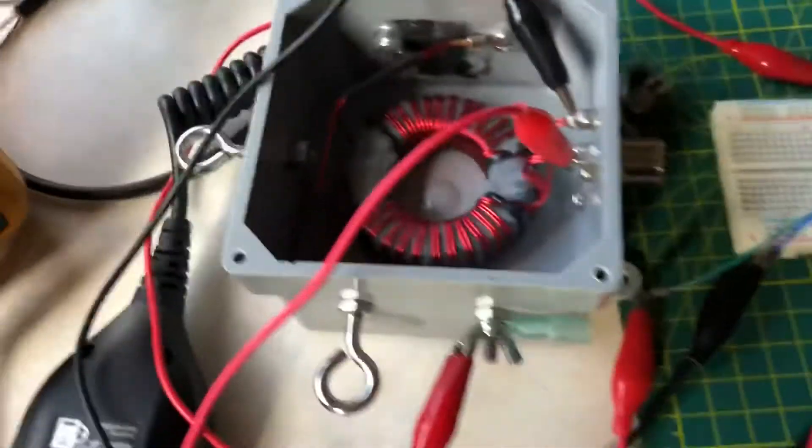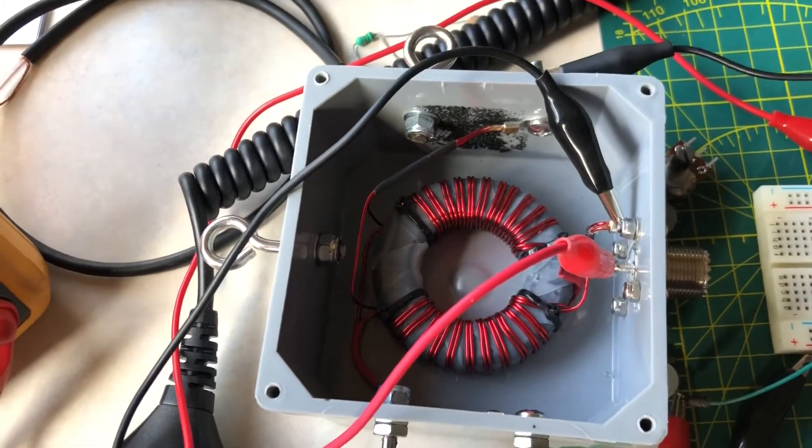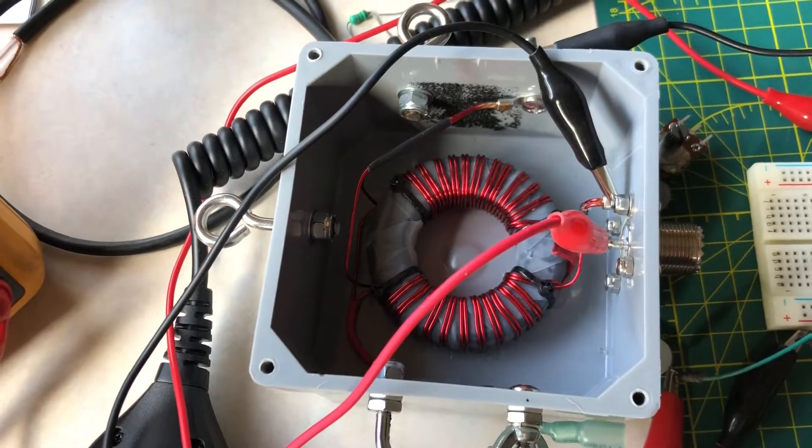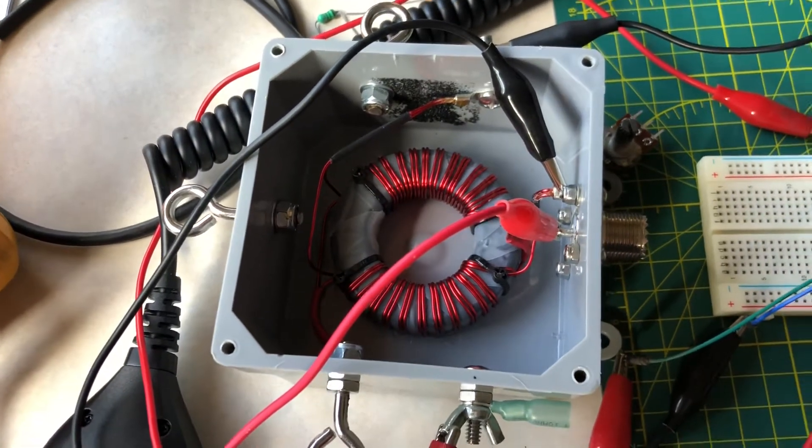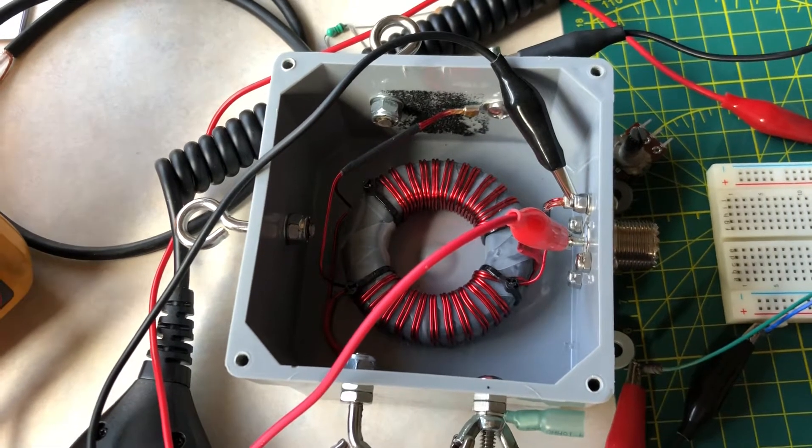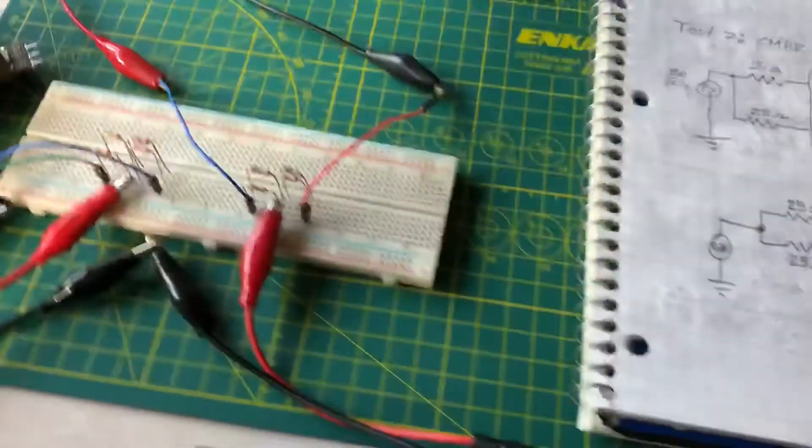The idea is I've got a DG0SA one-to-one balun that I've built here and I'm going to be using this on an 80 meter dipole antenna. I want to ensure that this balun is actually giving me good common mode rejection ratio. That's the goal of what I'm doing here right now.